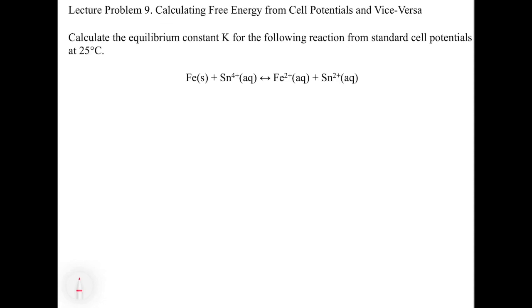So we know that our equation is E naught equals 0.0592 over n times the log of K. So we need to get two things in order to get K. We need to get the E cell, which we are going to get from the half reactions, and we need to get n, which is the number of electrons transferred. So let's start dissecting that.